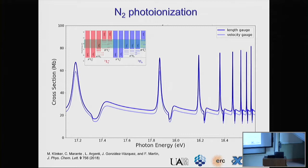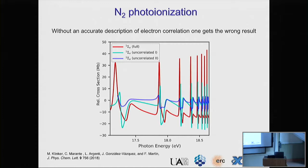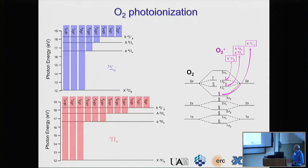These are the results — and you can see good gauge invariance. Comparing with synchrotron radiation experiments and experiments performed with attosecond pulses, the agreement is very good. There are some discrepancies in one channel, but in the other case the agreement is much better, and again I want to emphasize that there has been no rescaling. I want to illustrate the fact that if you don't describe electron correlation very accurately, the result is totally wrong in this region. For instance, if you neglect correlation between different channels, you get a completely different curve; if you neglect a little correlation in the description of the cationic state, you get yet another wrong result. The resonances are very poorly described — any small mistake deteriorates the result very much.